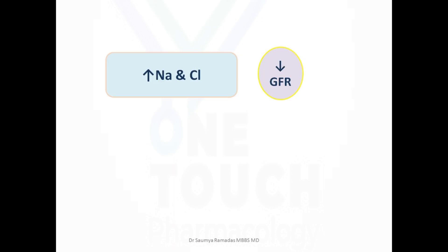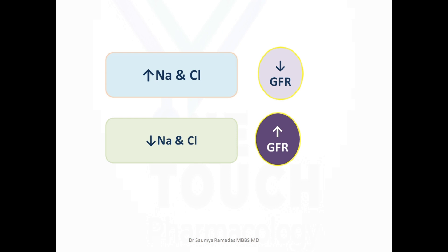Thus, when sodium and chloride concentration increases at the macula densa, glomerular filtration is reduced via tubuloglomerular feedback. Conversely, when sodium and chloride concentration dips, there is an increase in the glomerular filtration rate.